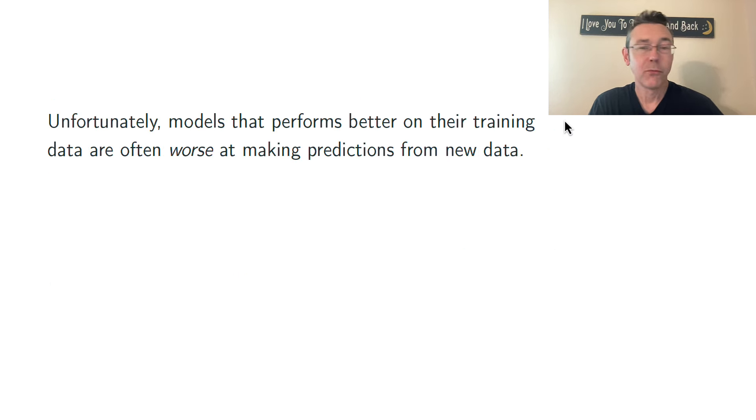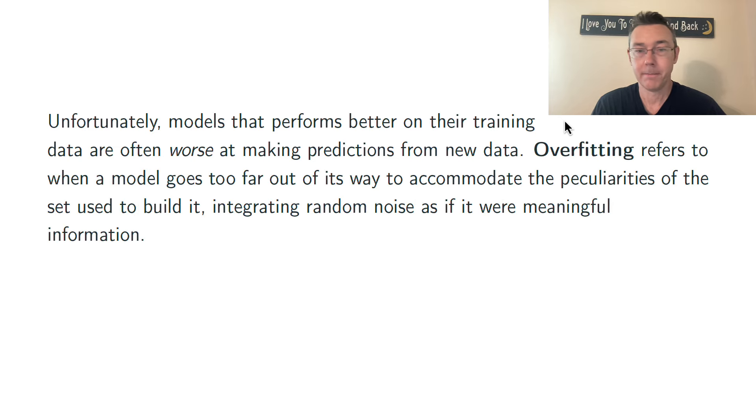Unfortunately, models that perform really well on the data that are used to train them often do worse when they're predicting results for new data. And that's called overfitting. That's a phenomenon where a model goes too far out of its way to fit the peculiarities of the set used to build it, and they end up integrating random noise as if that were meaningful information.